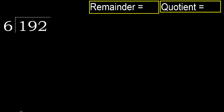192 divided by 6. 1 is less, therefore next. 19 is not less, therefore with 19.